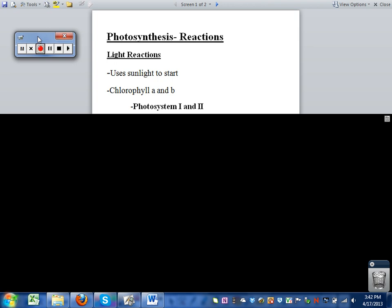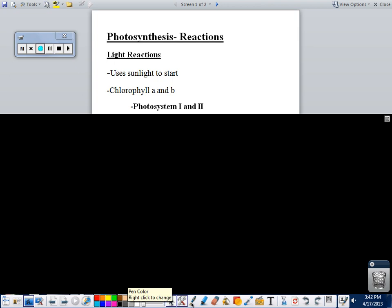The first are called the light reactions or the light-dependent reactions. Since these are light-dependent, they have to have light. If there's no light, they can't occur. Some people recognize that photosynthesis is all about sunlight, but they don't realize there are reactions during photosynthesis that don't require sunlight. The light reactions use sunlight, and the main way they get this going is through a pigment called chlorophyll A and B. These are the green pigments.